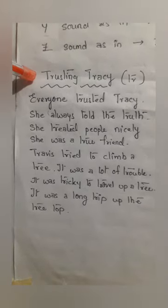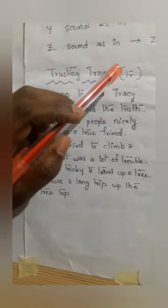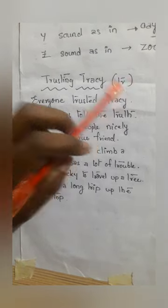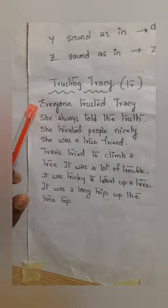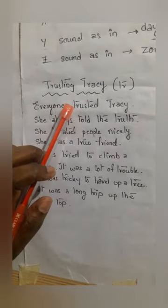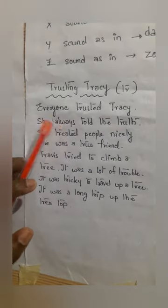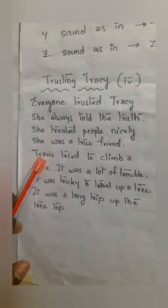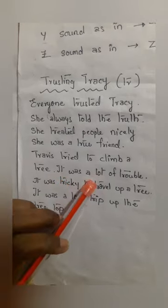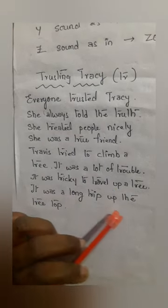So the first story is Trusting Tracy. This story will help you in practicing the sounds of T and R together. Everyone trusted Tracy. She always told the truth. She treated people nicely. She was a true friend. Travis tried to climb a tree. It was a lot of trouble. It was tricky to travel up a tree. It was a long trip up the tree top.